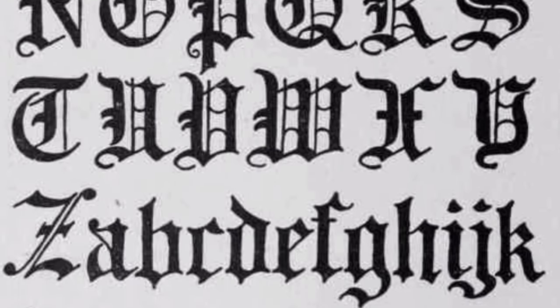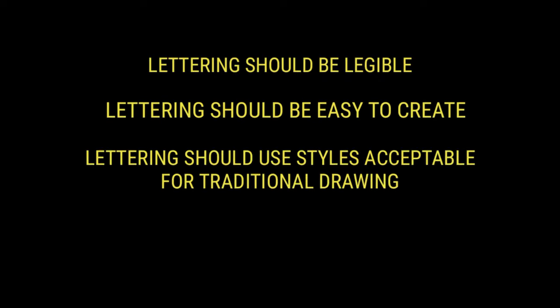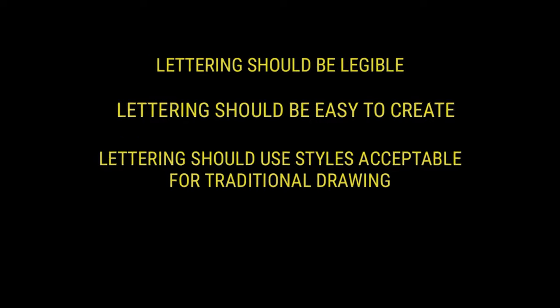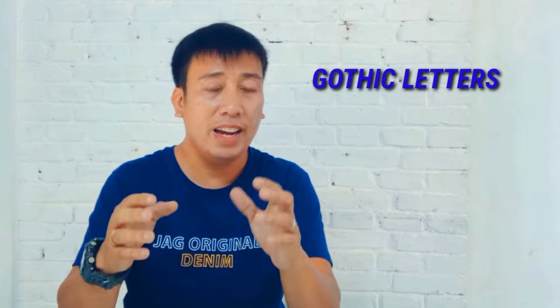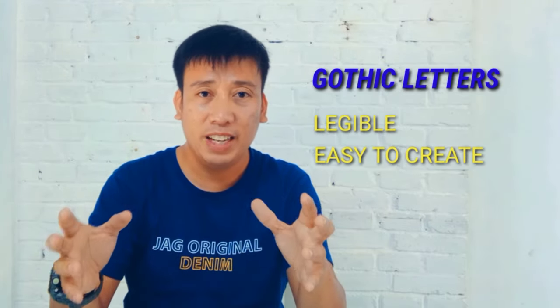In architectural working drawings, we use lettering. These are some of the characteristics of good lettering: lettering should be legible, lettering should be easy to create, and lettering should use styles acceptable for traditional drawing. That is why in architectural drawing, the commonly used lettering style is gothic letters, because gothic letters are highly legible and very easy to create.